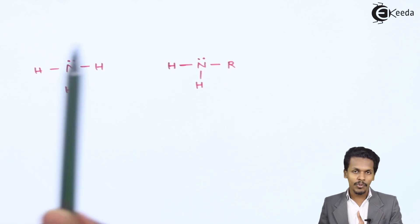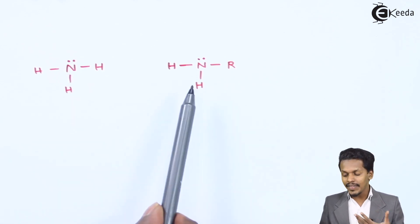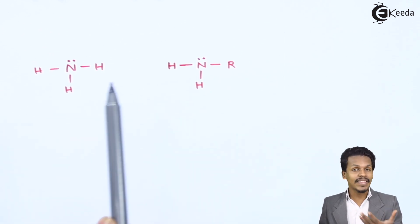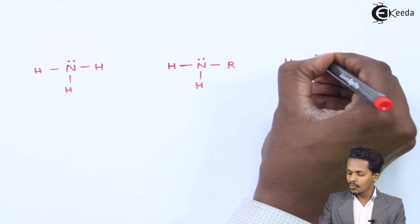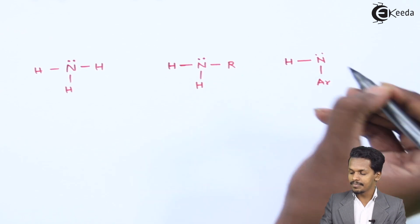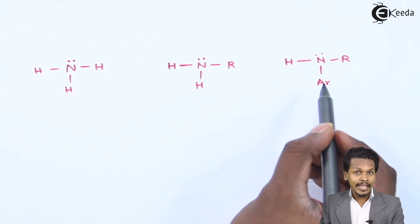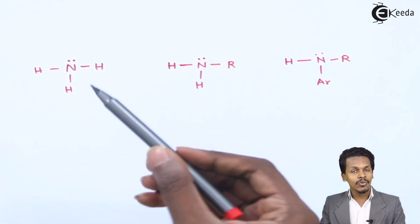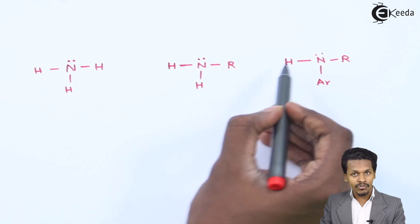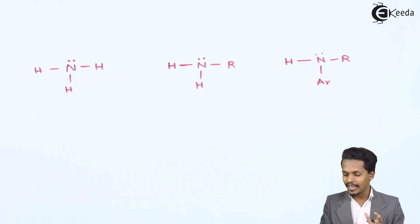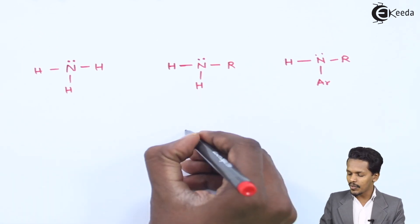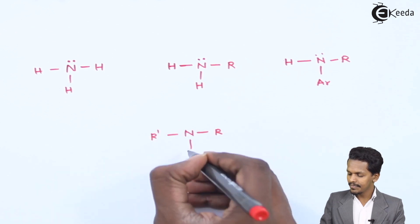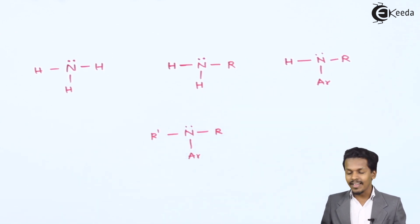This hydrogen can also be replaced with an alkyl or aryl group. Suppose I replace this hydrogen with an alkyl or aryl group as well — I could write it as Ar and R, or even with an alkyl group. These are two products also known as amines. And if all three hydrogen atoms of ammonia attached to the nitrogen are replaced by an alkyl or aryl group, the compound we get is also an amine.